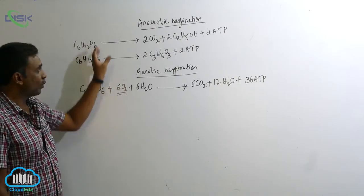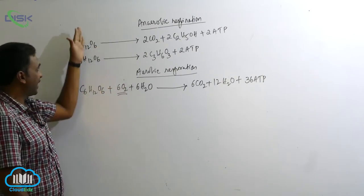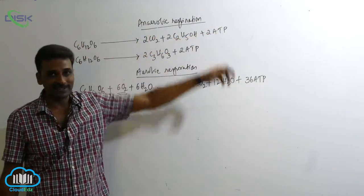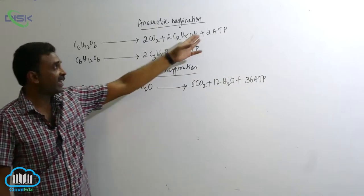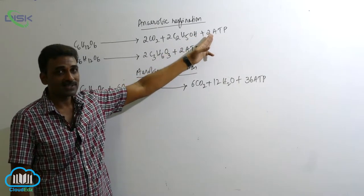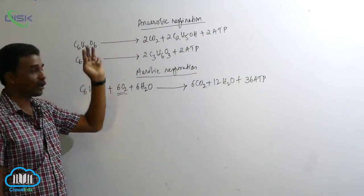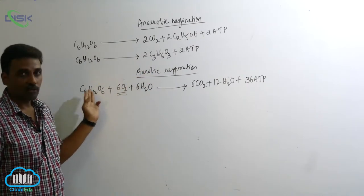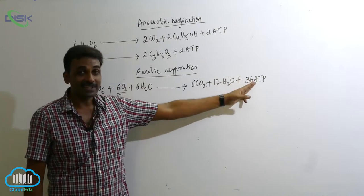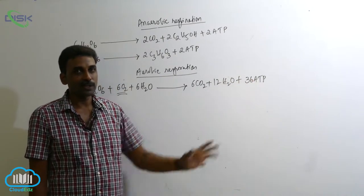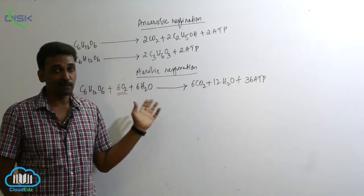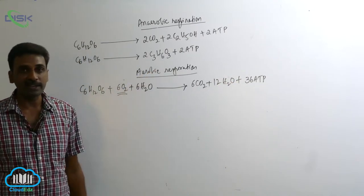So without utilizing oxygen, the energy trapped inside the glucose molecule is released. The amount of energy released however is very less—2 ATP molecules for one glucose molecule. But in aerobic respiration for one glucose molecule we are getting 36 ATP molecules. That means a large amount of energy is actually released from glucose molecules in aerobic respiration.